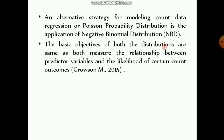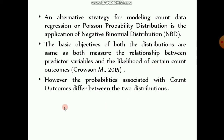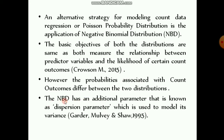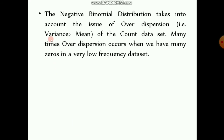The basic objectives of both distributions are the same, as both measure the relationship between predictor variables and the likelihood of certain count outcomes. However, the probabilities associated with count outcomes differ between the two distributions. The negative binomial distribution has an additional parameter known as the dispersion parameter, which is used to model its variance.